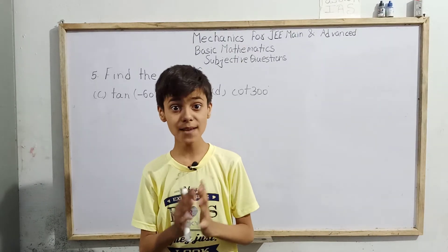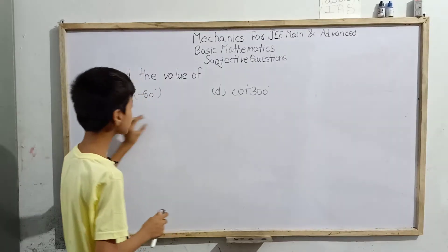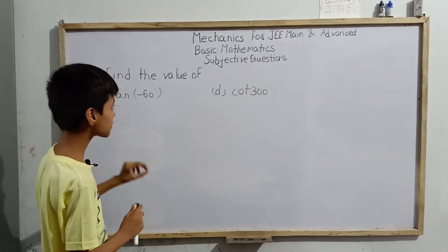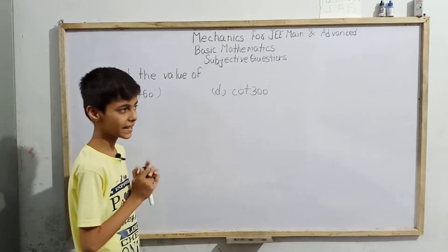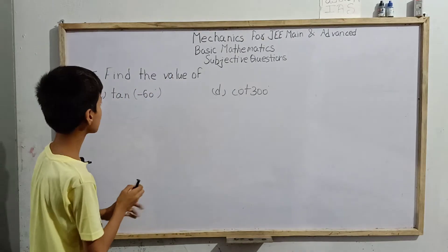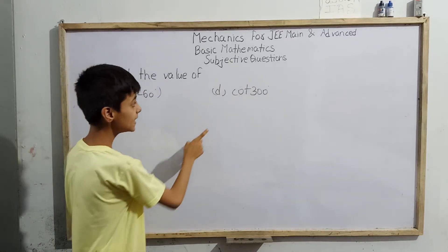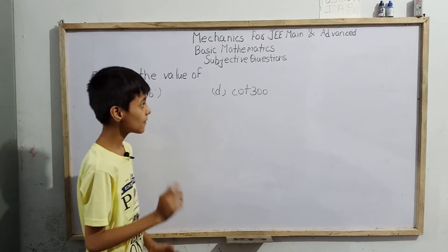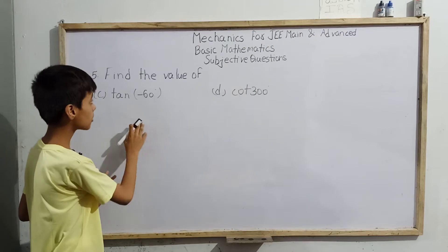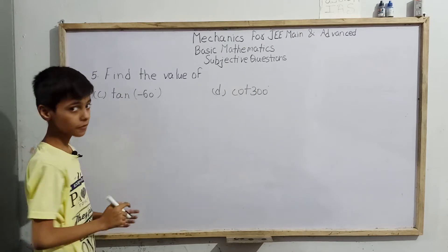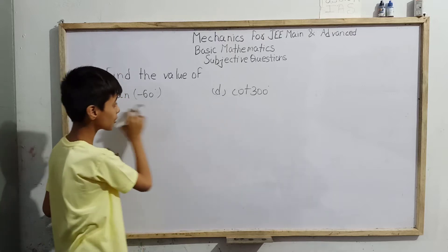Hello students, I am Sarim Khan studying fifth standard. Today we have question number third and fourth from the fifth question, subjective questions from basic mathematics from mechanics for JEE Main and Advanced. The fifth question is: find the value of c) tan(-60°) and d) cot(300°). Note that c and d are the same as a and b of the fifth question — only the angle and trigonometric ratios are changed.